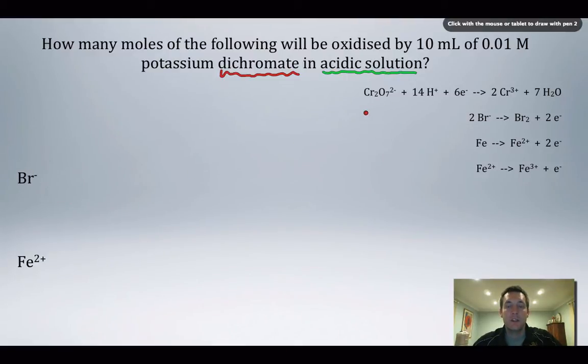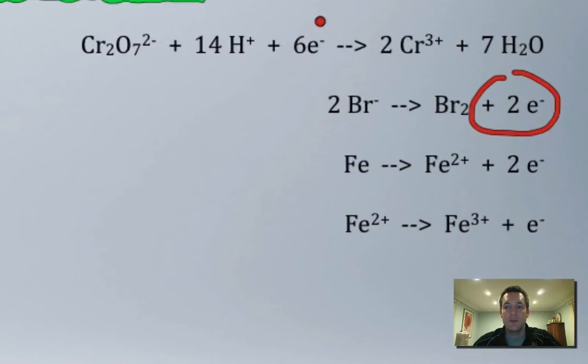Let's start by looking at the bromide question. If I look up on my data sheet half equations that have bromide in, I'm only going to find this one. We've looked before at how we put two half equations together. We first look at the number of electrons.